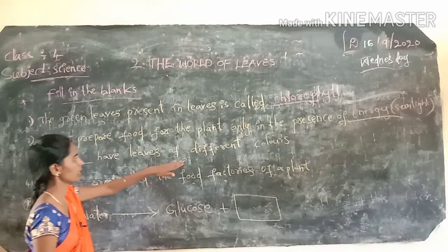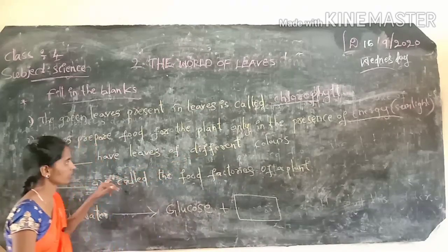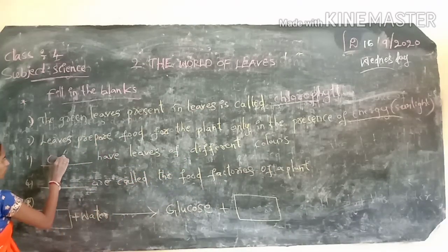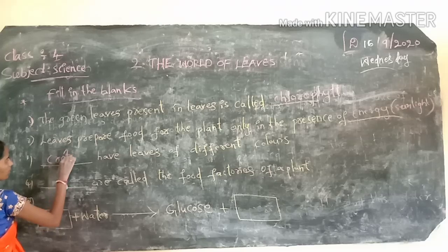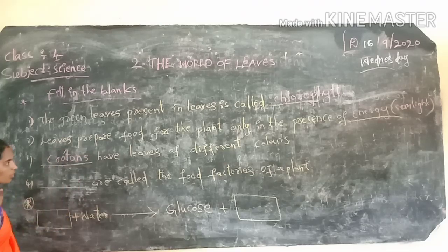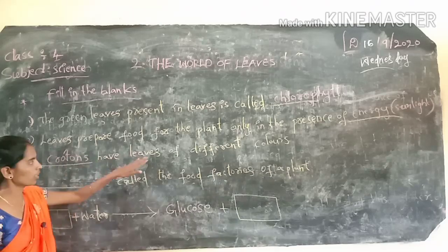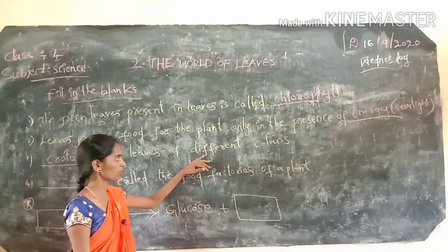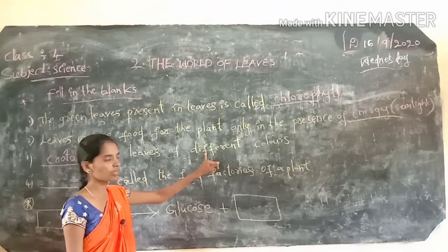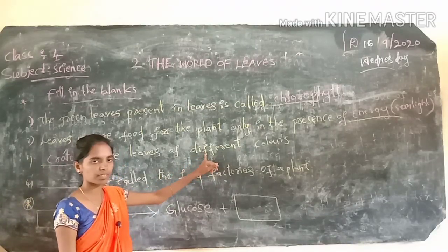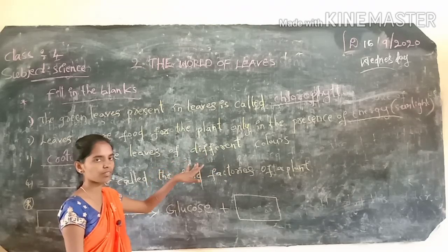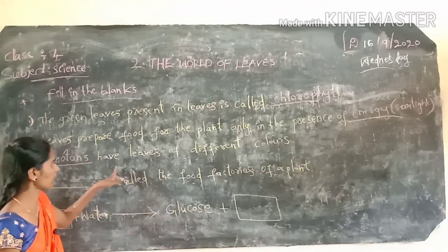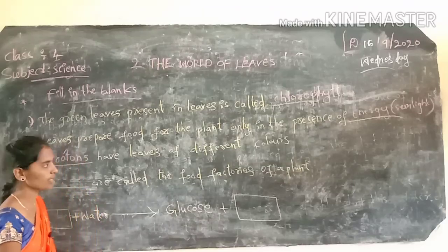Next: dash has leaves of different colors — which plant? Croton. Crotons have leaves of different colors — some are red, some are green. So the answer is croton.